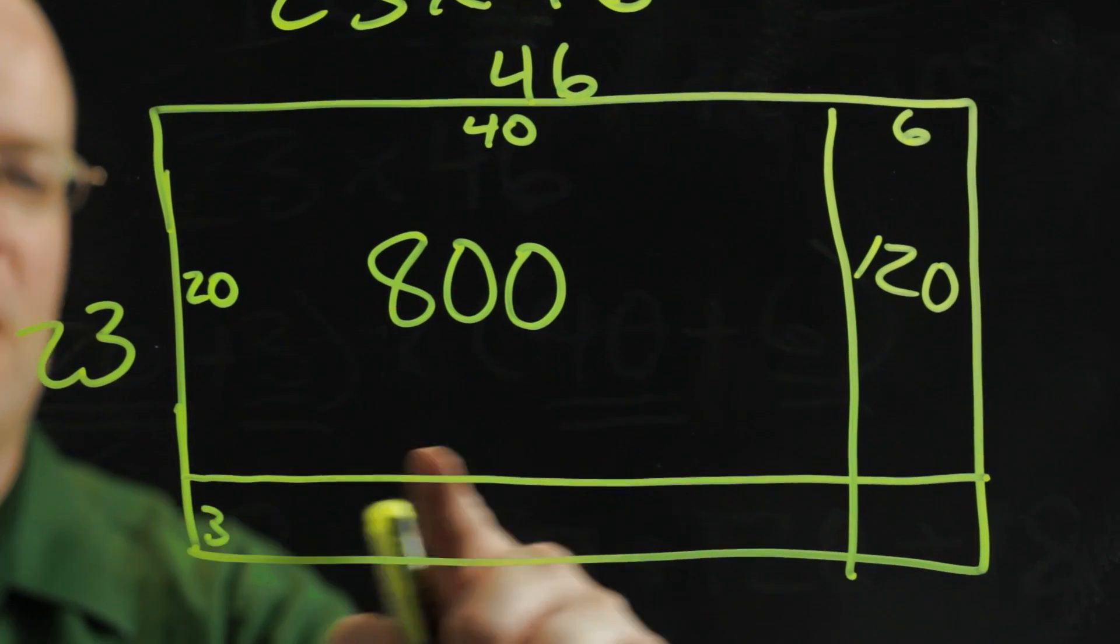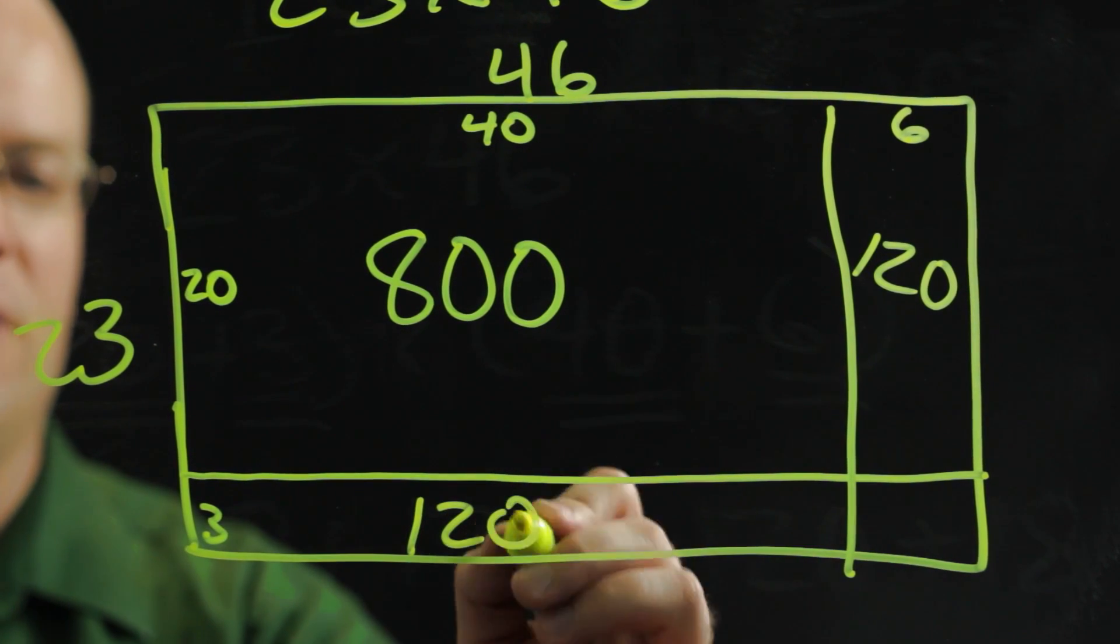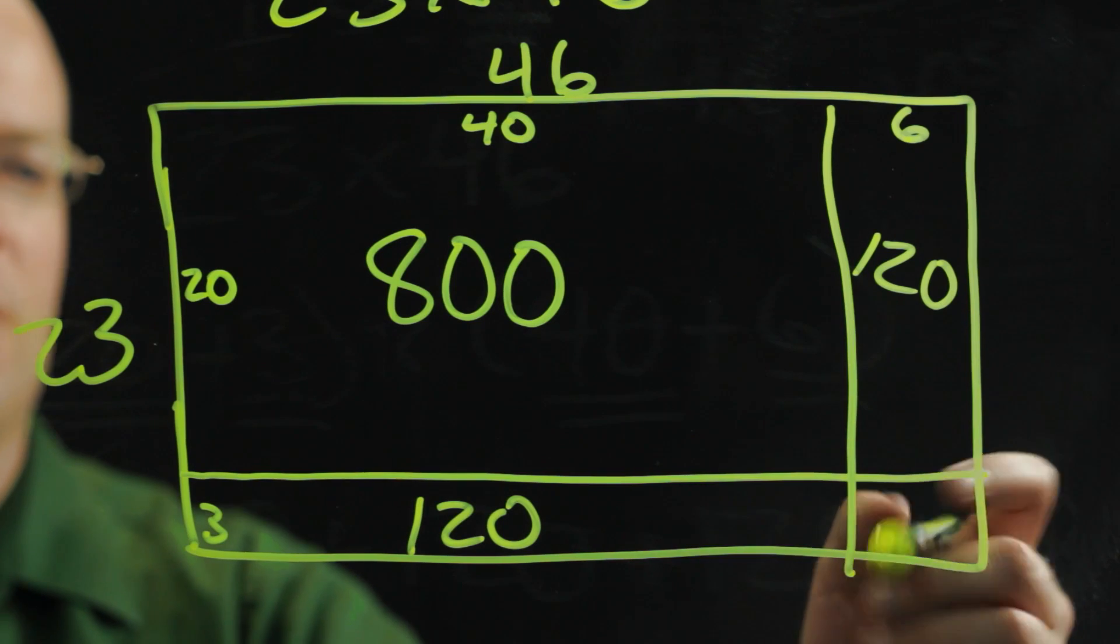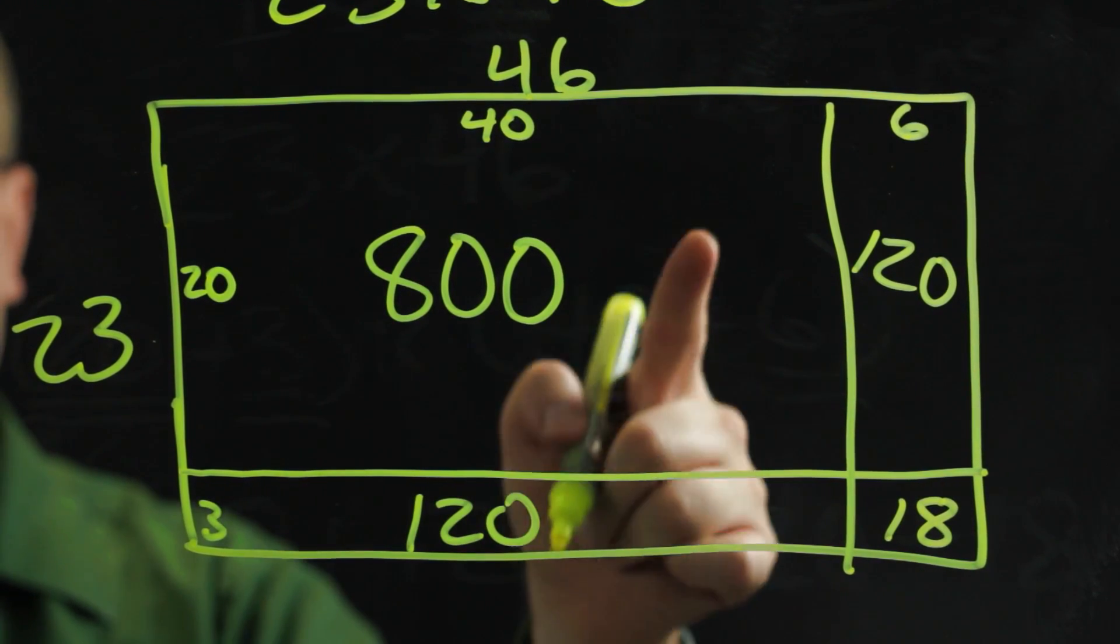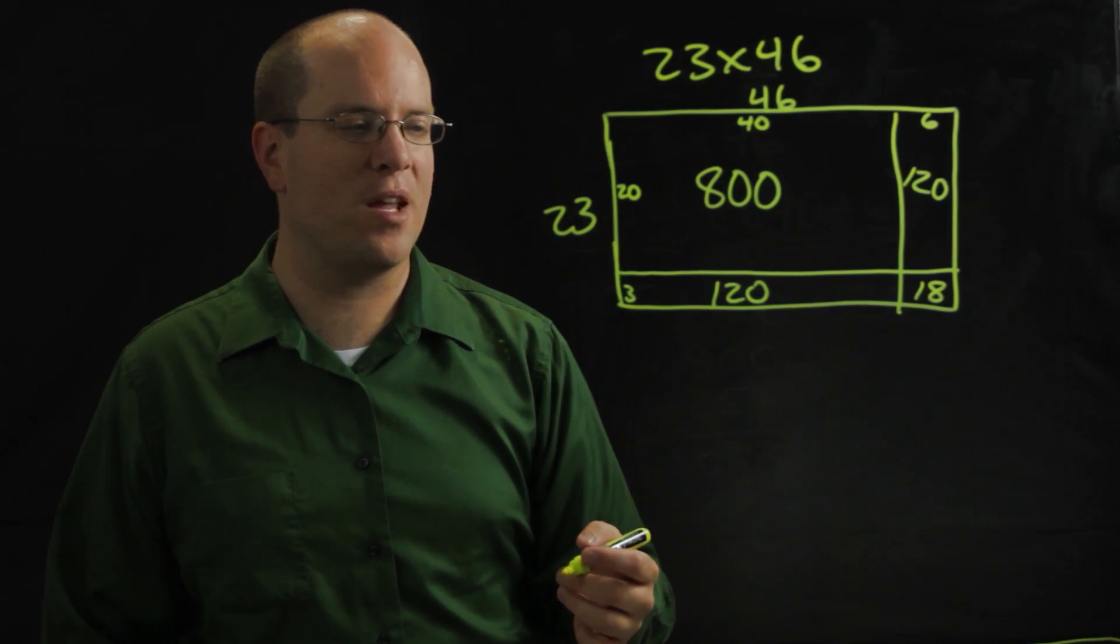This section is 3 by 40, which is 120. And this section is 3 by 6, which is 18. You can see those are the same four numbers. If you add them up, you'll get the same answer.